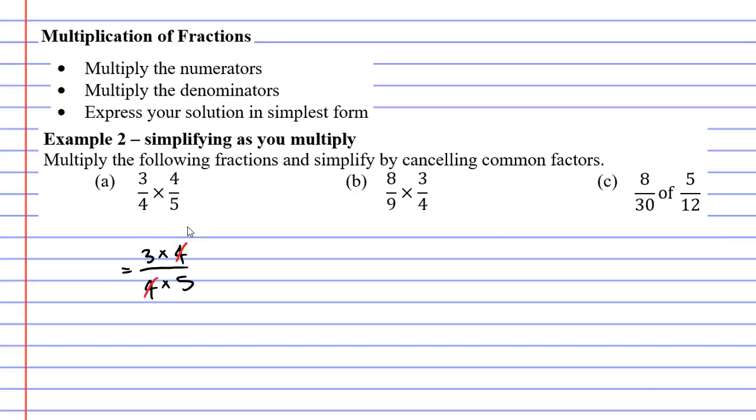You can cancel a number at the top of the fraction as long as you cancel the same number at the bottom of the fraction. This will now give us 3 over 5 as our solution.